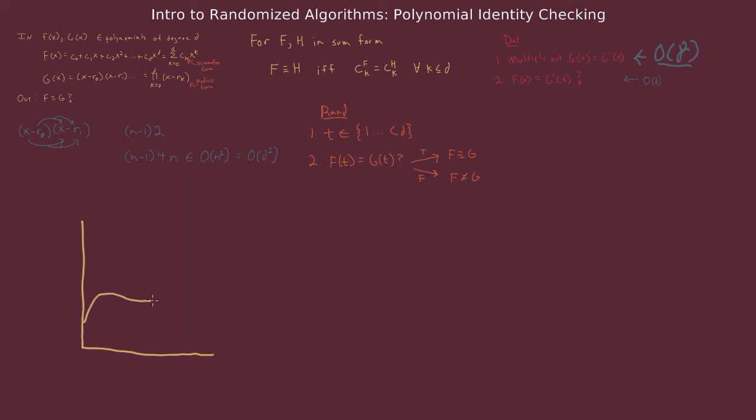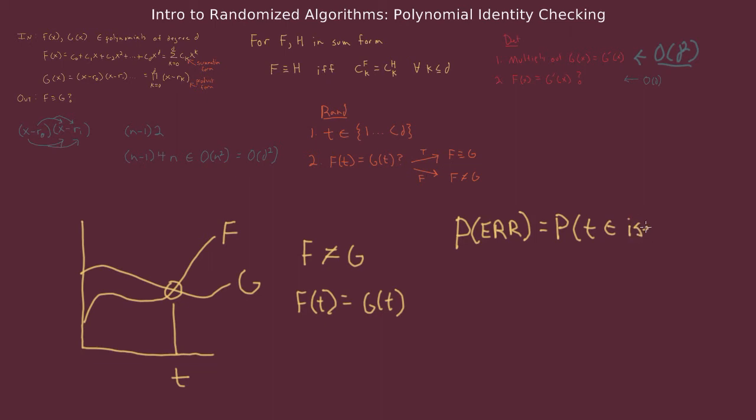So let's look at the probability of error of the randomized algorithm. The algorithm can make an error when it concludes that f and g are identical, because f of t and g of t are identical. This could be erroneous because t could simply be an intersection point for f and g. So the randomized algorithm is going to make an error whenever t is an intersection point of f and g and f and g are not identical. So the probability of error in the randomized algorithm is equivalent to the probability that t is an intersection point of f and g.